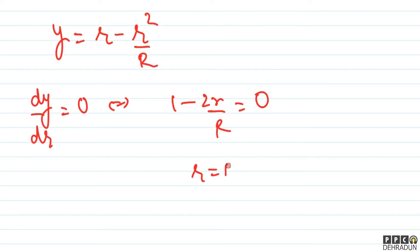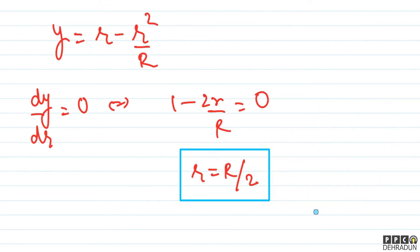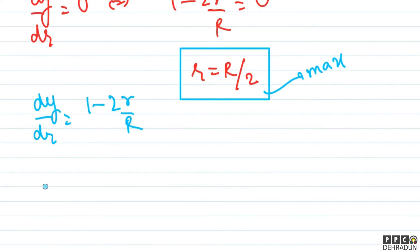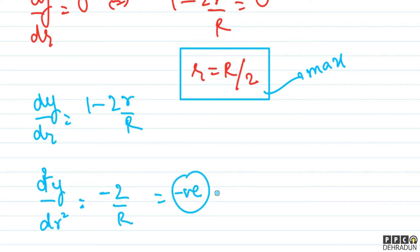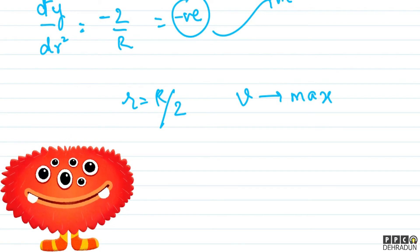From dy/dr = 0, we get r = R/2. This is the radial distance at which circular motion gives maximum speed. To confirm it's a maximum: the second derivative d²y/dr² = -2/R, which is negative, confirming this is indeed a maximum. So at r = R/2, the velocity is maximum.